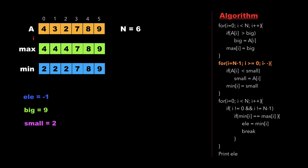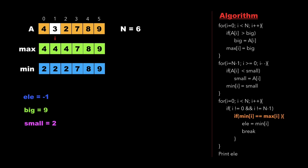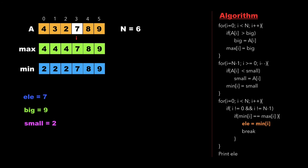The min array is [2, 2, 2, 7, 8, 9]. Finally we run a third for loop from i=0 to n, checking at each step that i is not an extreme value (not 0 or n-1) and whether min[i] equals max[i]. At i=1, 4 is not equal to 2, so we increment. At i=2, 2 is not equal to 4, so we increment. At i=3, we find 7 equals 7, so we update ele to 7 and break out of the loop. We then print the value of ele, which is 7.